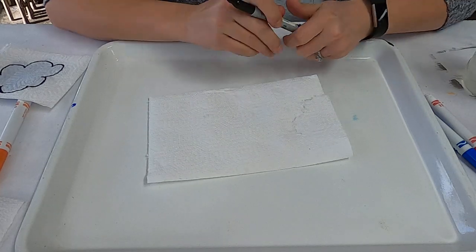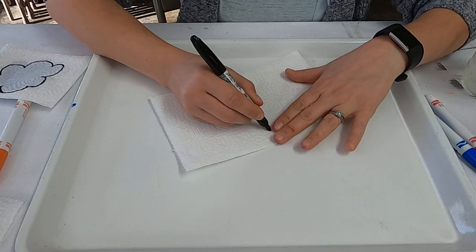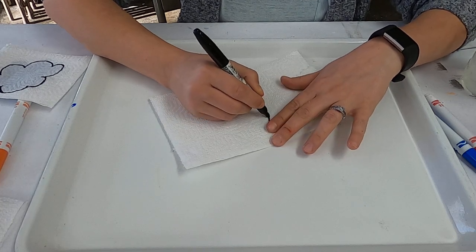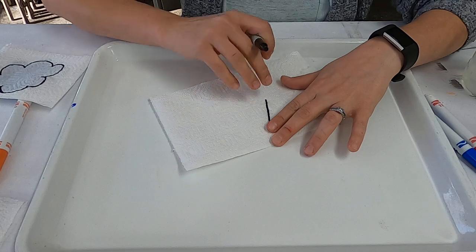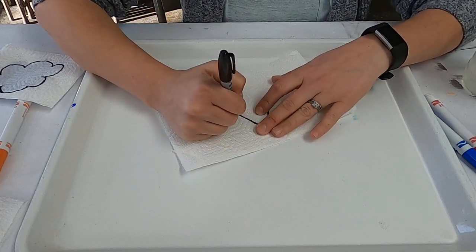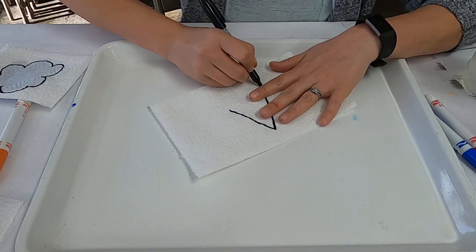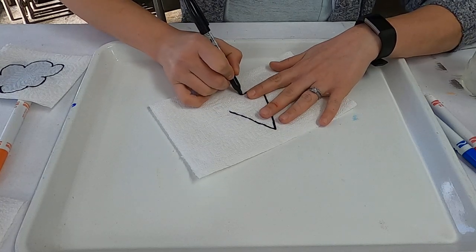And it could be any design. I'm going to do something really simple to show you what I mean. So you can be any design, and you want to make sure that you go slow enough. You want this to bleed through this paper, through the top layer of this paper towel. So I'm going to make a simple triangle.